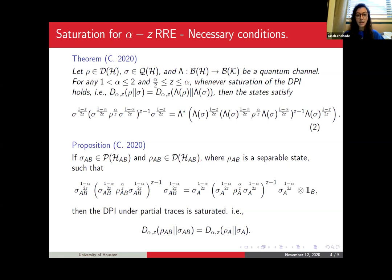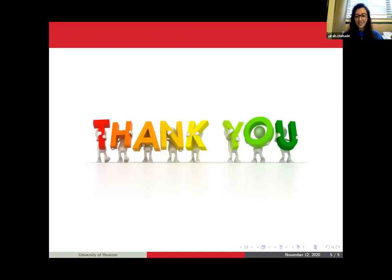I want to share results: whenever alpha is between one and two and z is between alpha over two and alpha, there are partial results for saturation characterization. If the data processing inequality is saturated, then we have this statement of equality for rho and sigma. This is not an if and only if statement. However, there's another result in the reverse direction. The only case known where this is if and only if is when alpha equals z, the alpha sandwiched Renyi relative entropy case. These are partial results. I'm interested to see where else we can go. Thank you.